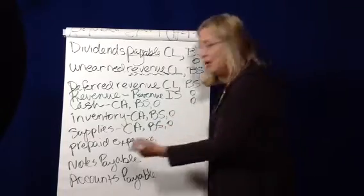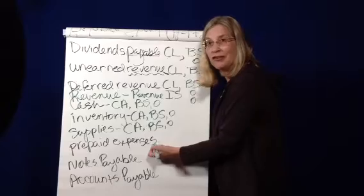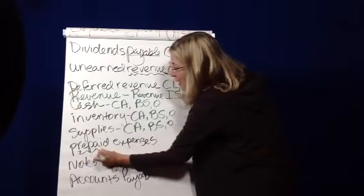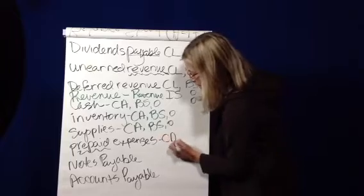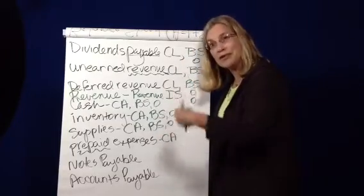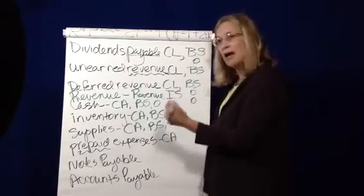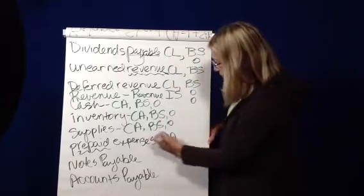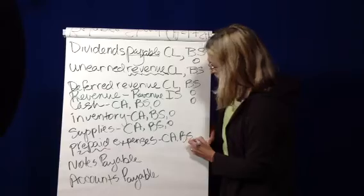Here's the other tricky one. Prepaid expenses. You're saying, oh, it's got to be an expense. But no, we've prepaid them, so it's a current asset, because it has future potential value, and it will be an expense when we consume it. So because it's a current asset, balance sheet, operating.